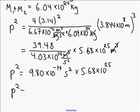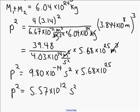So finally, p squared equals 5.57 times 10 to the 12, second squared.